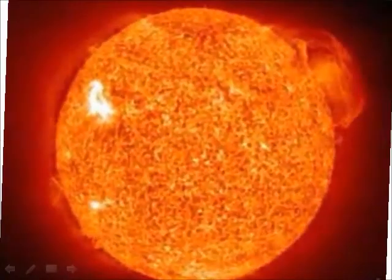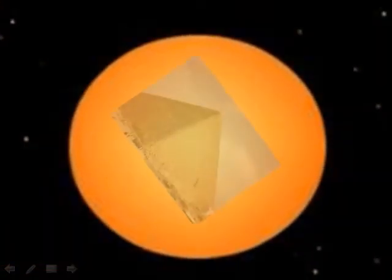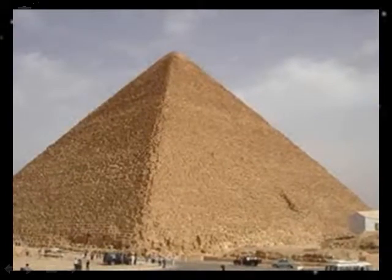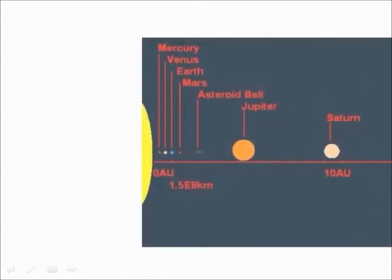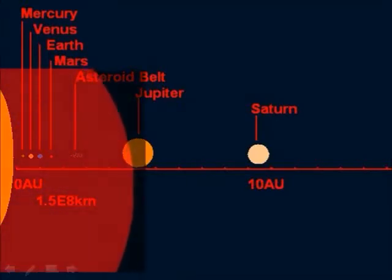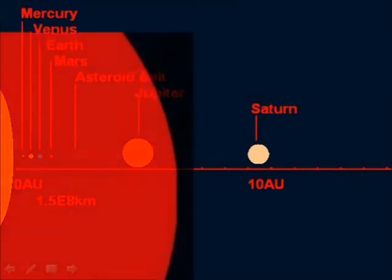If we downscale our sun to the size of this small jar, then VY Canis Majoris, the largest known star, will come to the size of Khufu's pyramid. Its radius is about 2000 solar radii. If it were to replace the sun at our solar system's center, its surface would almost reach the orbit of Saturn.